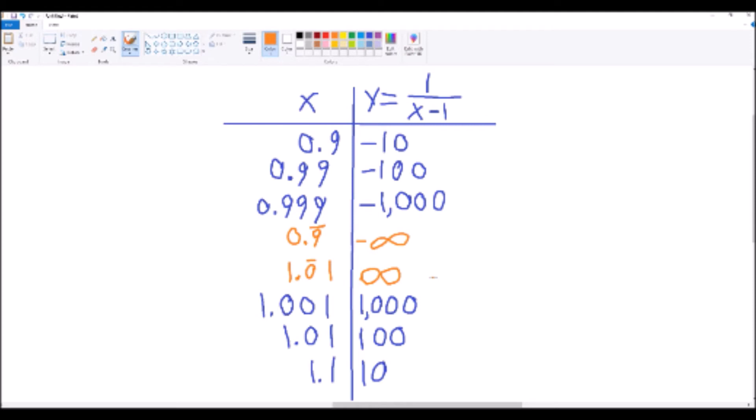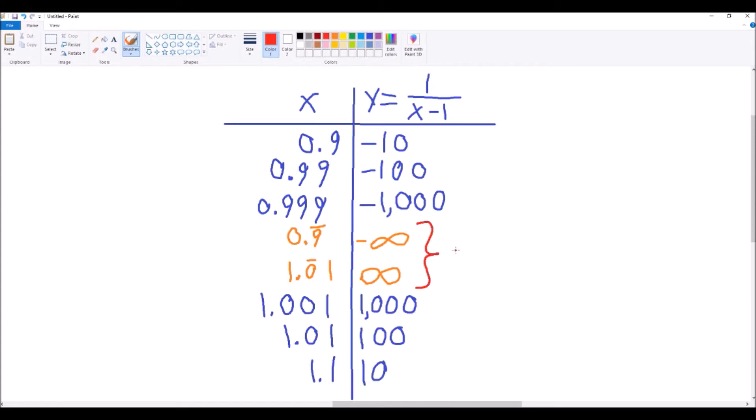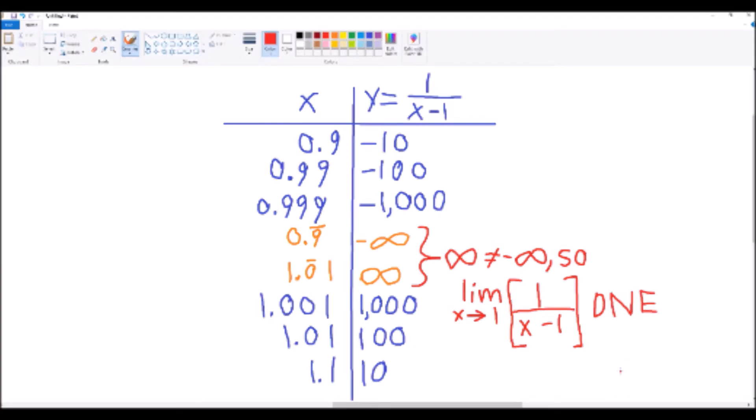Now, if we were to combine the results together, we would actually get that since infinity and negative infinity are not equal, the limit as x approaches 1 of 1 over x minus 1 does not exist. It would return two different values and the limit can only exist if it can handle 1.